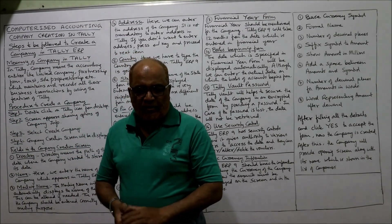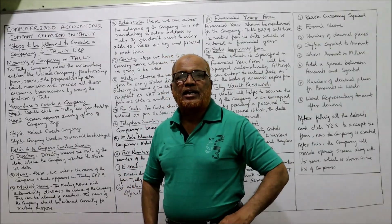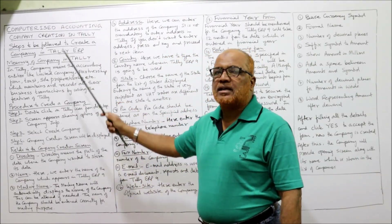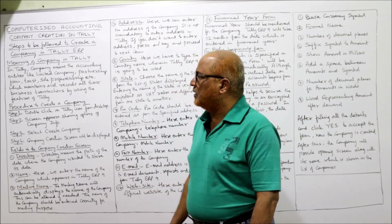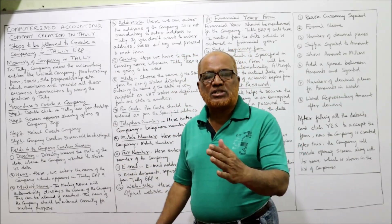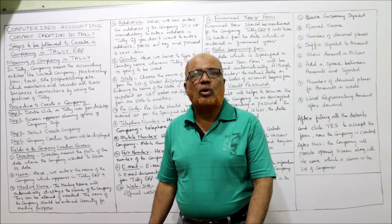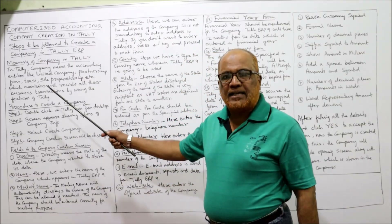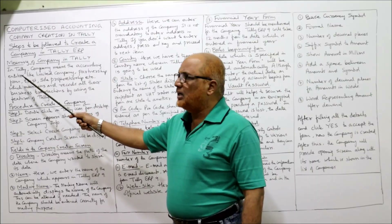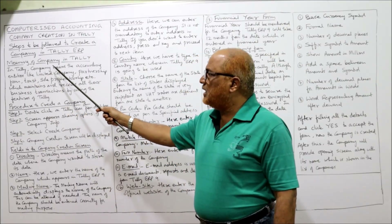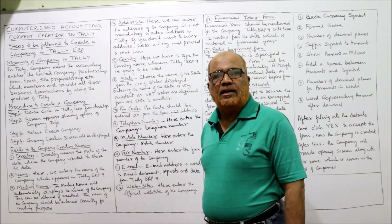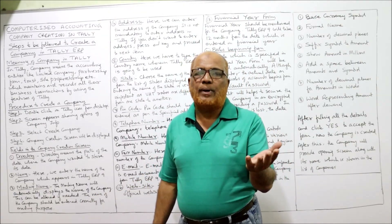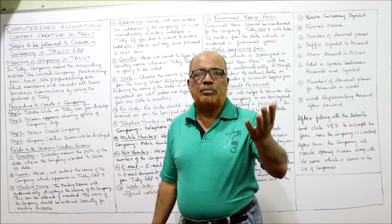Now I'll discuss in detail about the creation of a company — the steps to be followed to create a company in Tally ERP 9. First, before starting the steps, we must know what is meant by 'company' in Tally. In Tally, company means an accounting entity. Any accounting entity will be treated as a company.